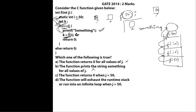Option c says the function returns 0 when j equals 50. When j equals 50, the program executes the printf statement and then the recursive call, which keeps looping back — it is going into an infinite loop. Therefore the return 0 statement is never reached, so option c is wrong. Option d says the function will exhaust the runtime stack or run into an infinite loop when j equals 50. This is correct — it runs into an infinite loop and exhausts the runtime stack.